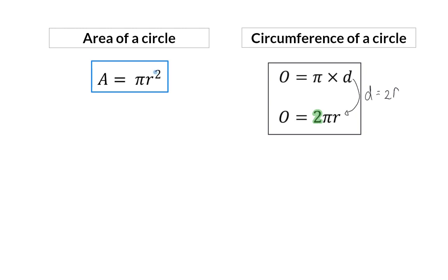Whereas for the area, we square the radius, meaning that we multiply the radius by itself. Let's have a look at an example to make this difference clear.